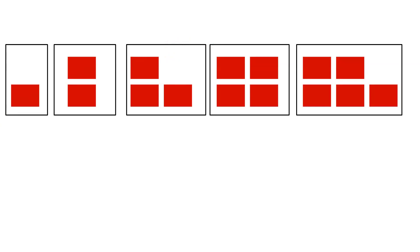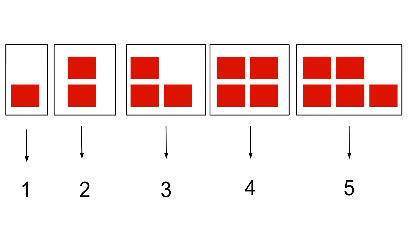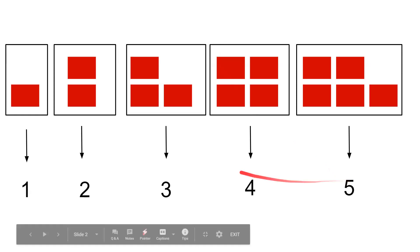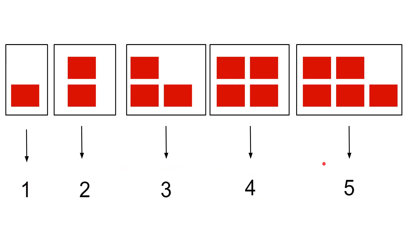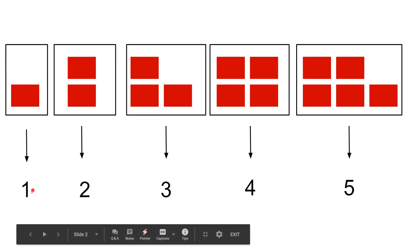Now, instead of using rectangles, we are going to write the number of these rectangles. So let's try. This is one, these are two rectangles, these are three, these are four, and these are five rectangles. This is also a pattern — yeh bhi ek pattern hai. But what is happening in this pattern? As we are moving forward, the numbers are increasing by one. So this is also a pattern in which we are moving forward by one — one, two, like this.